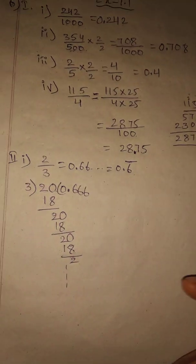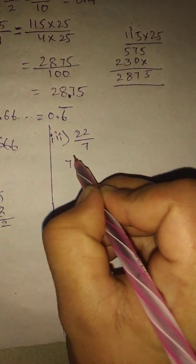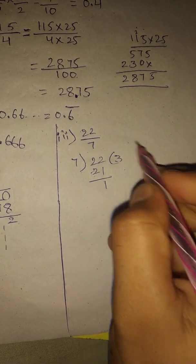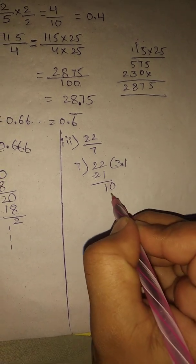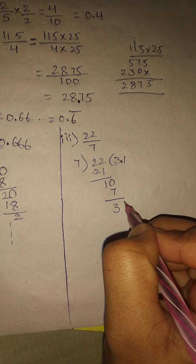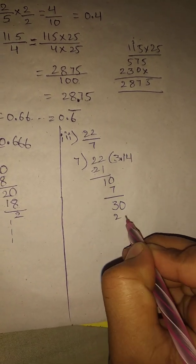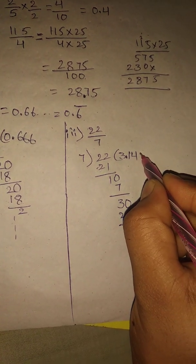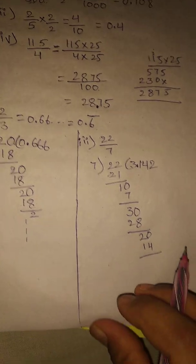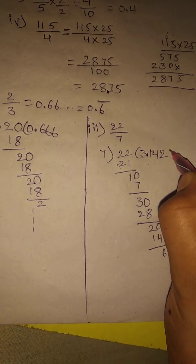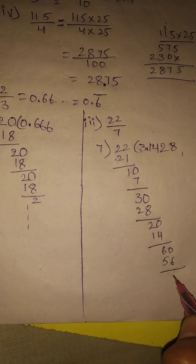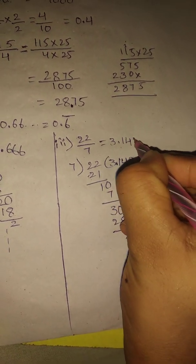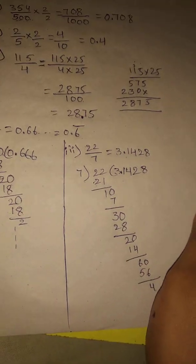Third problem: 22 by 7. Seven threes are 21; 22 minus 21, remainder is 1. Keep decimal point, take 10, seven ones are 7, take 30, seven fours are 28, 30 minus 28 is 2. Take 20, three sevens are 14, remainder 6; take 60, seven eights are 56, 60 minus 56 is 4. So 22 by 7 equals 3.1428 up to four decimal places.